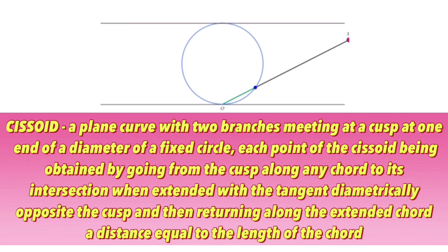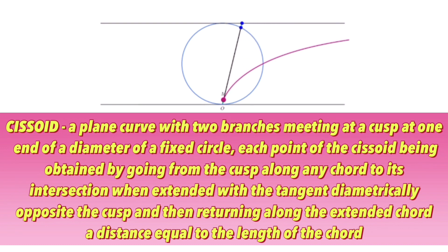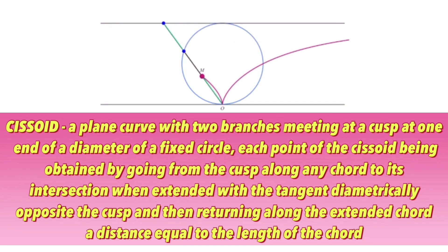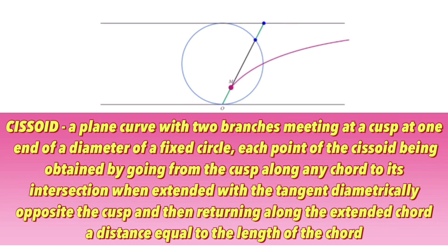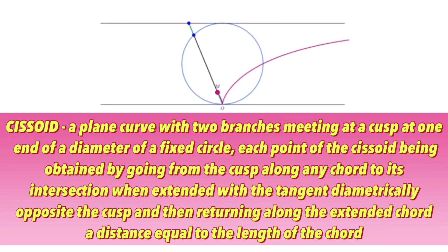Mathematically, a cissoid is a plane curve with two branches meeting at a cusp at one end of a diameter of a fixed circle. Each point on the cissoid is obtained by going from the cusp along any chord to its intersection, when extended, with a tangent diametrically opposite the cusp, and then returning along the extended chord a distance equal to the length of a chord.